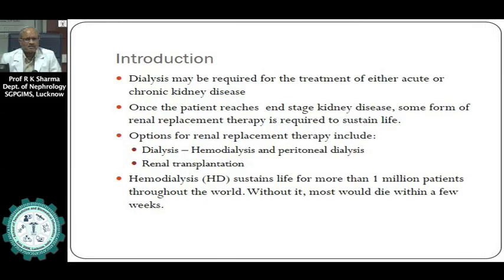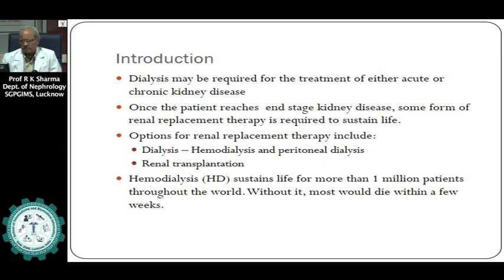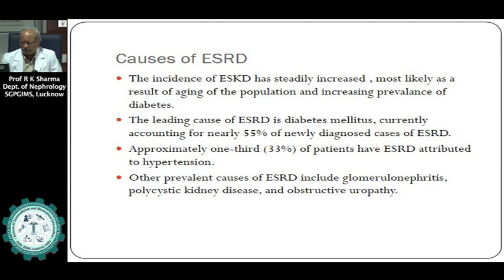About dialysis and how it can be used as a renal replacement therapy in chronic kidney disease. Dialysis is required for the treatment of both acute and chronic kidney disease, with the main emphasis on the role of dialysis in chronic renal failure. Once the patient reaches end-stage kidney failure, some form of renal replacement therapy is required to sustain life. The options are either dialysis or kidney transplantation.